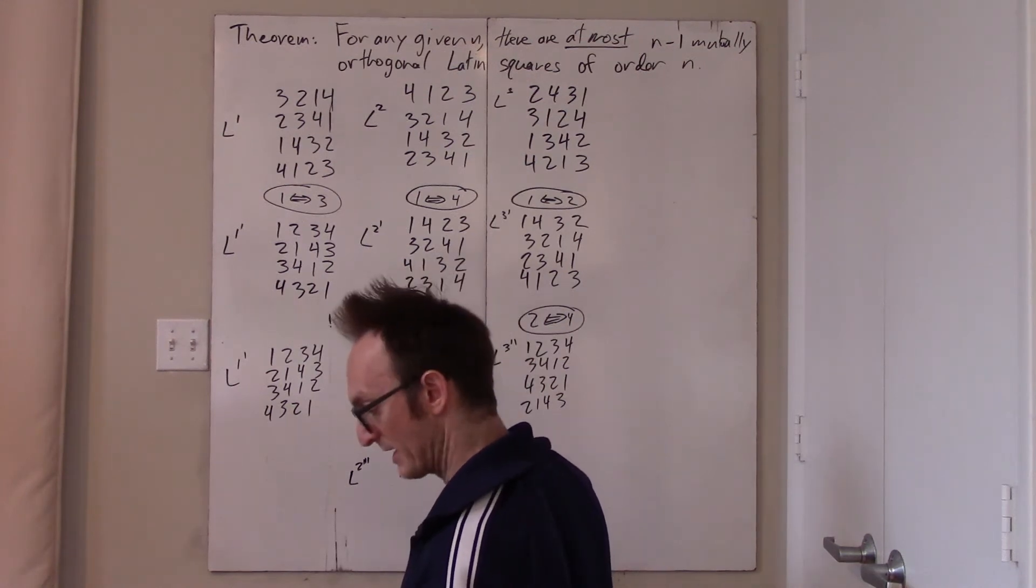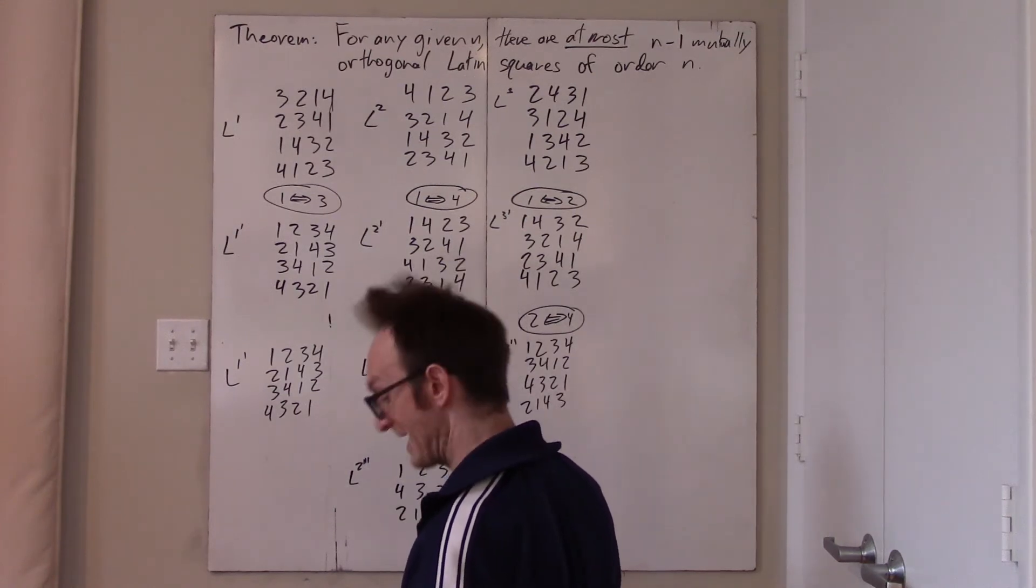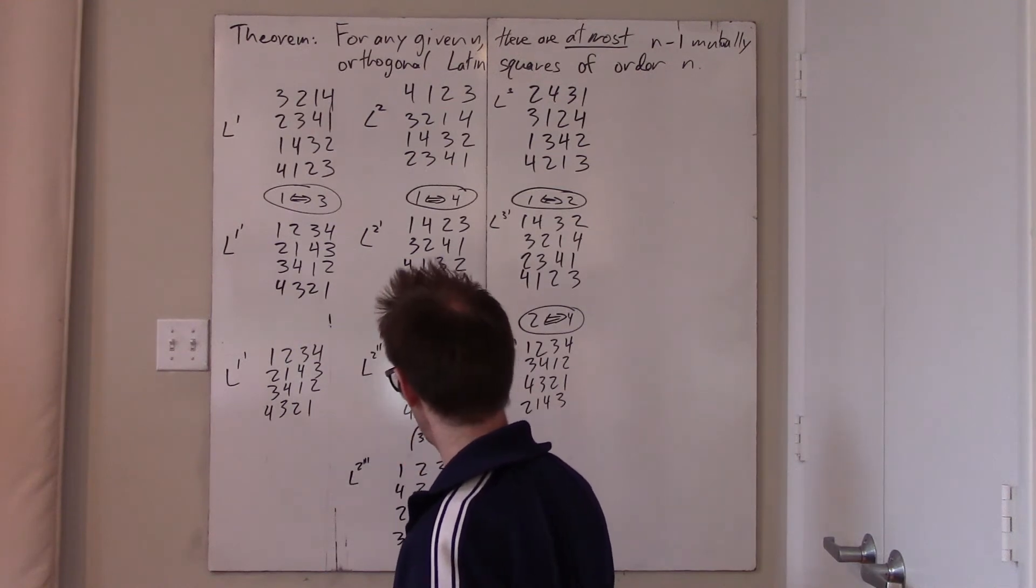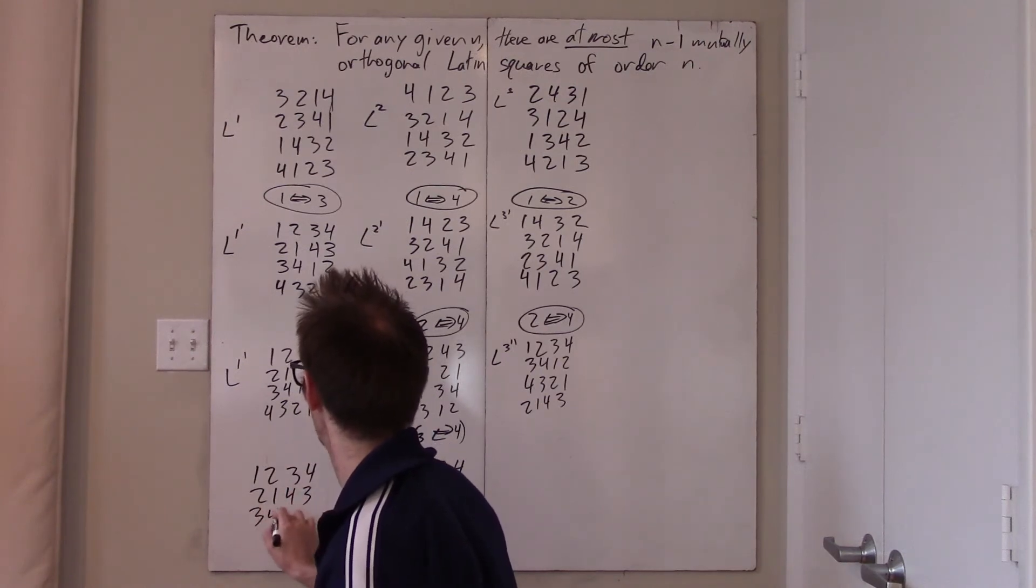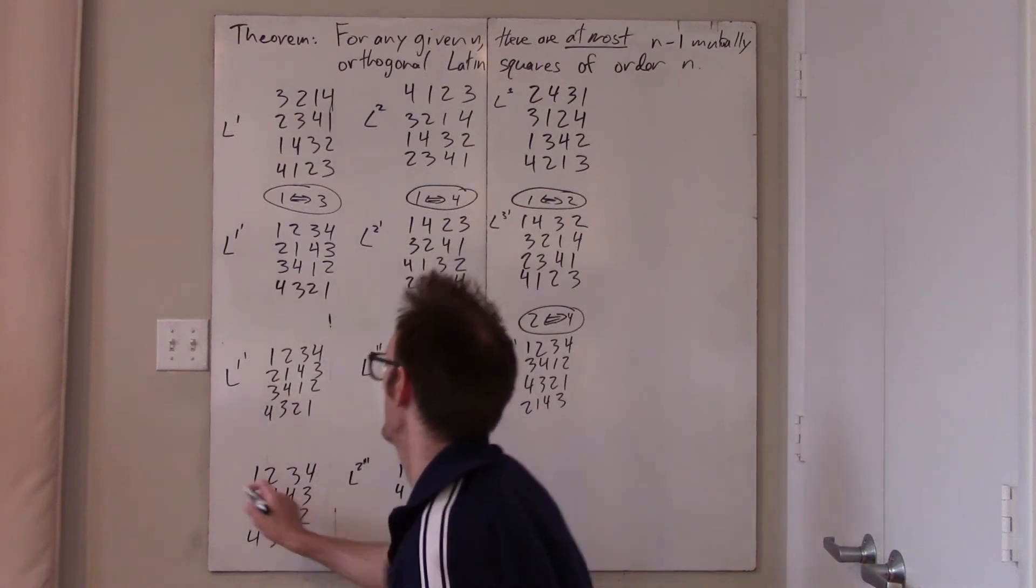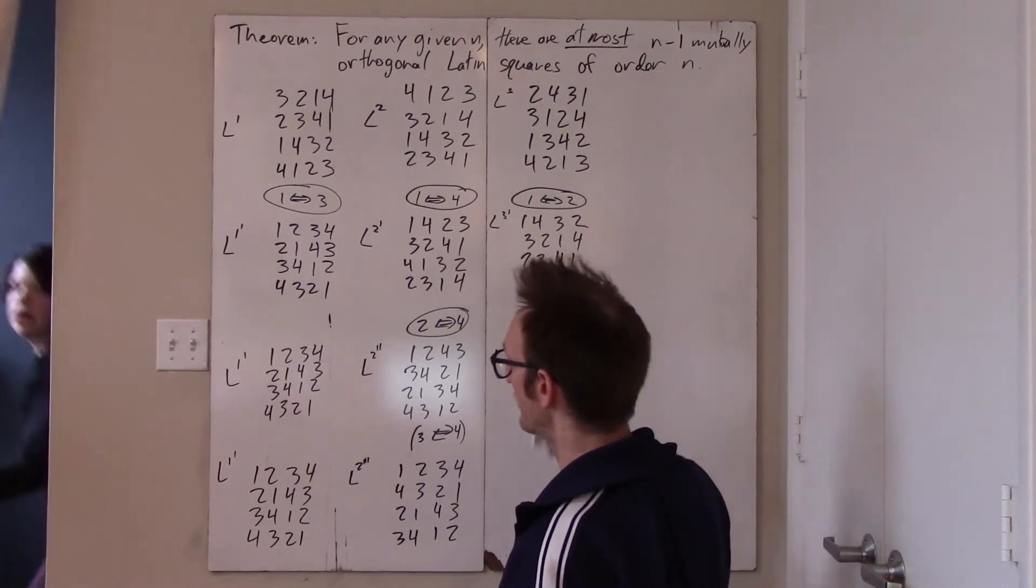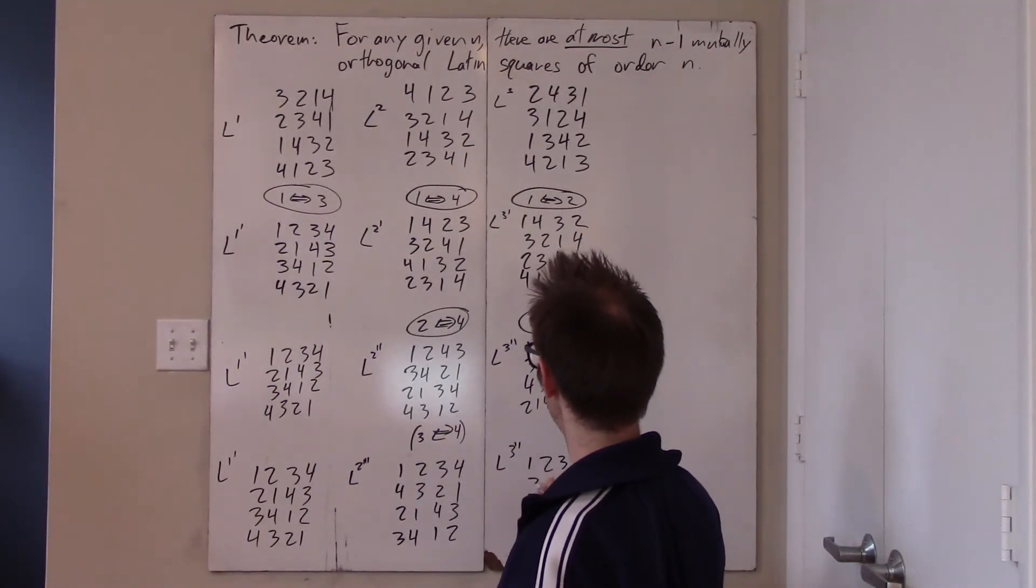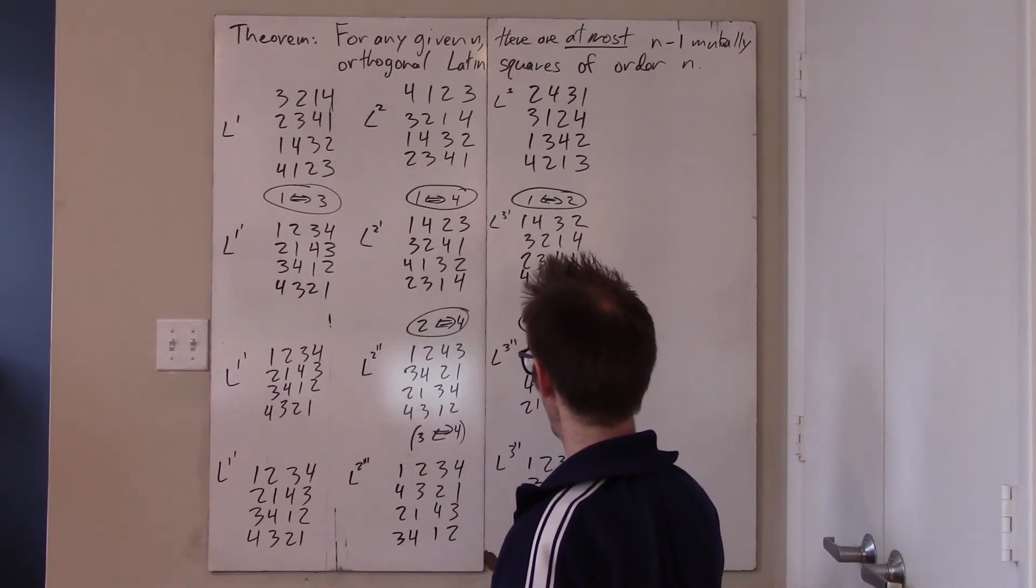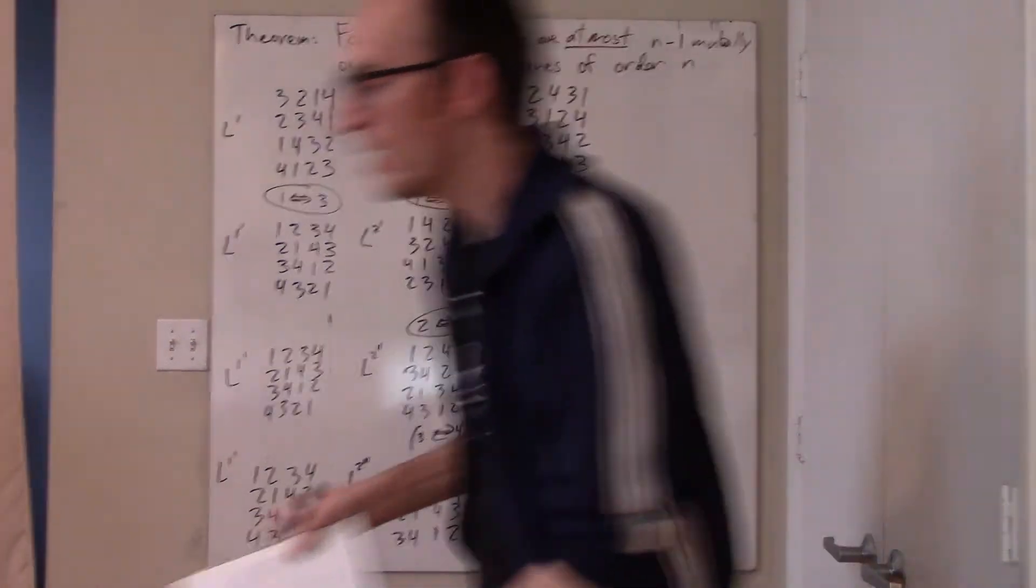Okay. So all of this is very tedious. But what we now have, the big picture, is that this lemma has now been proven. What is the lemma? The lemma is that if you have three mutually orthogonal Latin squares of order 4, then it is possible to convert those three mutually orthogonal Latin squares of order 4 into a set of three mutually orthogonal Latin squares of order 4 in which the first row is 1, 2, 3, 4.